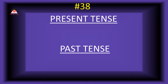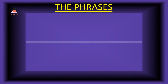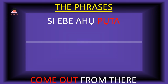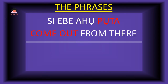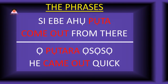Word number thirty-eight: 'pota,' meaning 'come out.' The past tense of pota is 'potara,' meaning 'came out.' Present tense phrase: 'sieba hoo pota' — come out from there. Past tense: 'o-potara oso oso' — he came out quickly.